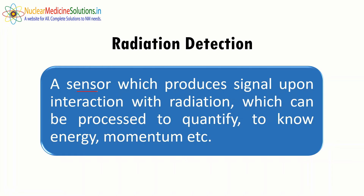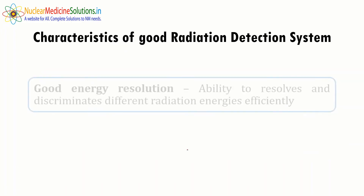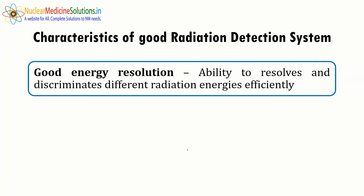Any radiation detection system has a sensor which produces a signal upon interaction with radiation, which can be processed to quantify the energy and momentum. There are some desired characteristics of a radiation detection system, which include good energy resolution — that means the ability to resolve and discriminate different radiation energies efficiently.